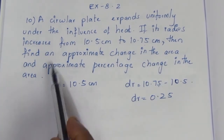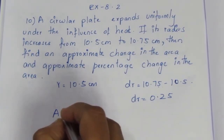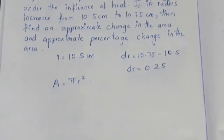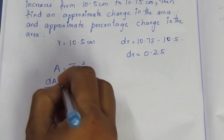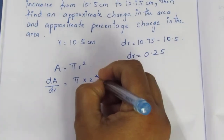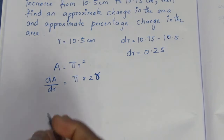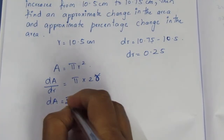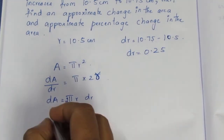We need to find the approximate change in the area. The area formula for a circle is A = πr². So here we can find the change in the area: dA by dr equals 2πr, and multiplying both sides gives dA = 2πr · dr.